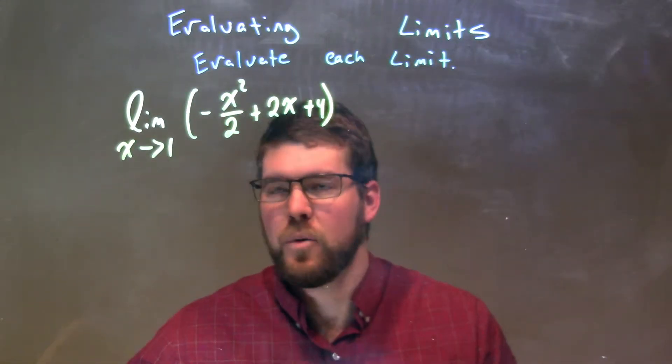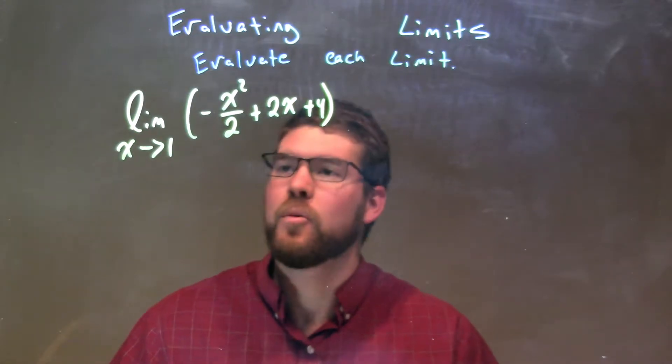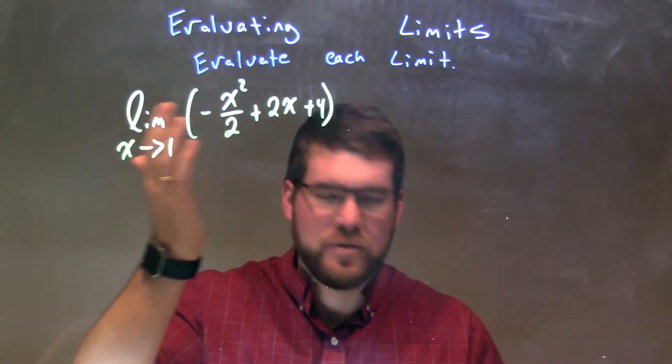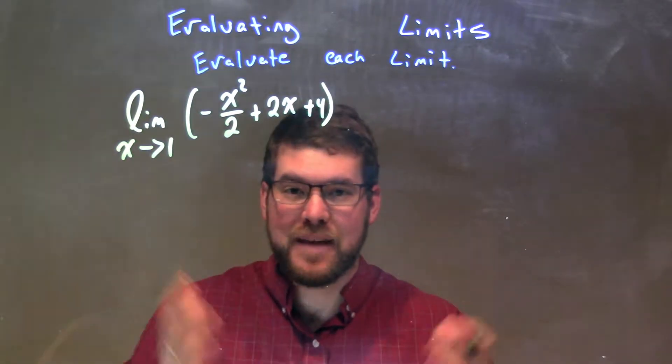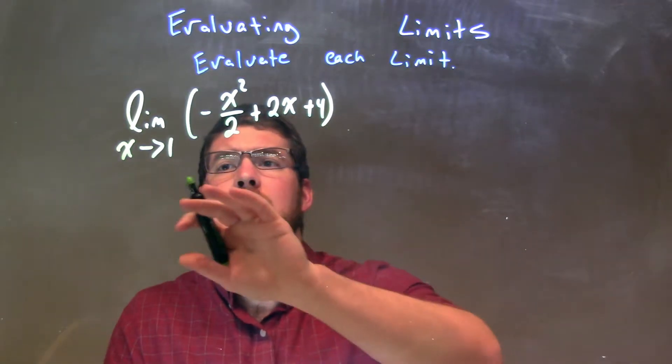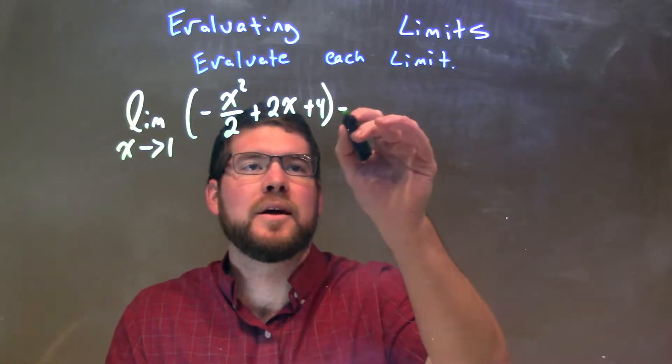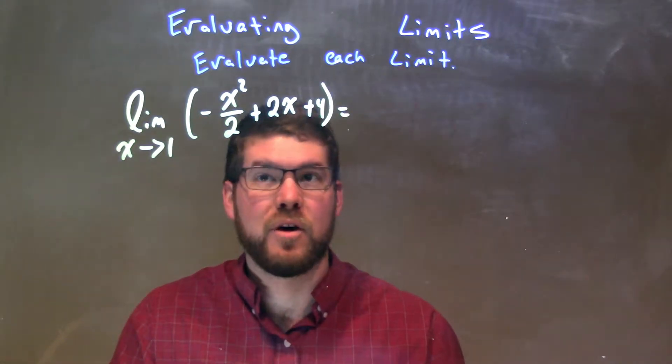We can take the limit wherever it exists, wherever our equation, polynomial here, exists. Well, since it's a polynomial, it exists everywhere, all real numbers. So we can directly substitute 1 in for our x's to solve here.